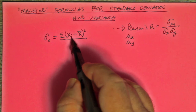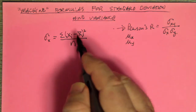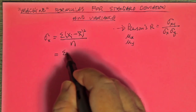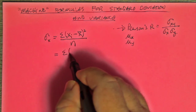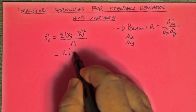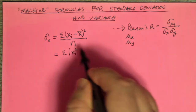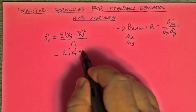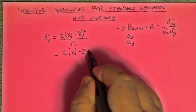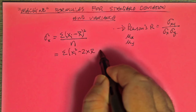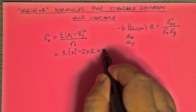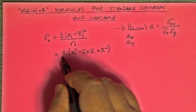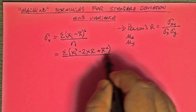We have what is a perfect square, which we can expand. So we have the summation of X squared — the data squared — minus 2·X̄·X, plus X̄ all squared, all divided by N.